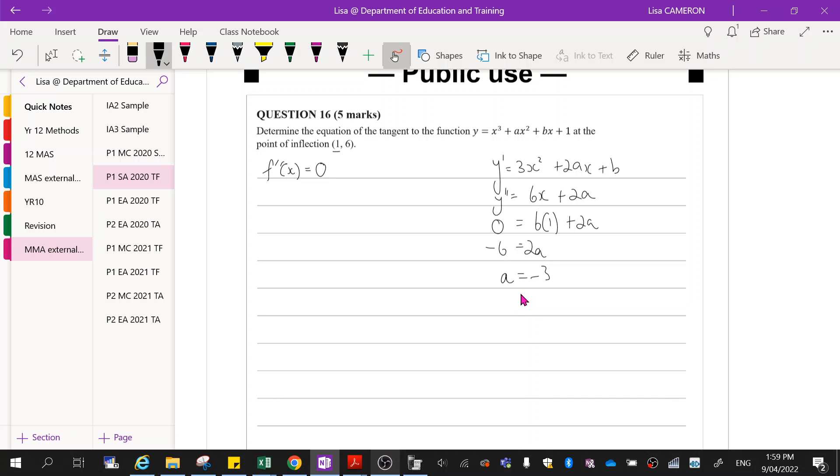Now if it is a point of inflection, what else does that tell us? If I substitute back in, a is negative 3, x is 1, y is 6, I should be left with b only. So that'll allow me to solve for that second part.